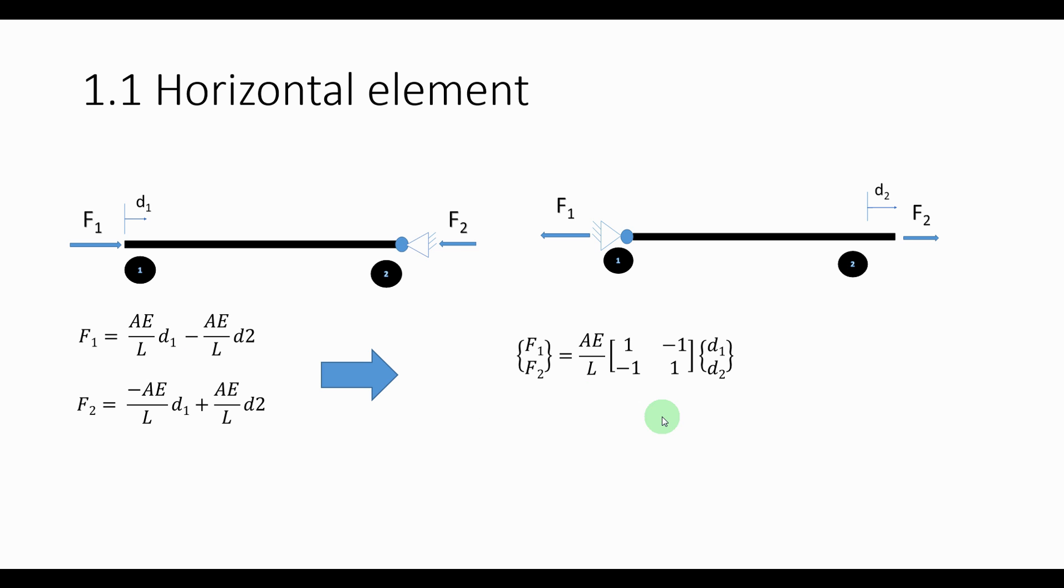And for the stiffness method this is basically the normal equation. We usually write F which represents the vector of the two forces and K is the stiffness matrix which is the AE over L and that matrix in this case and the D represents D1 and D2 displacements.